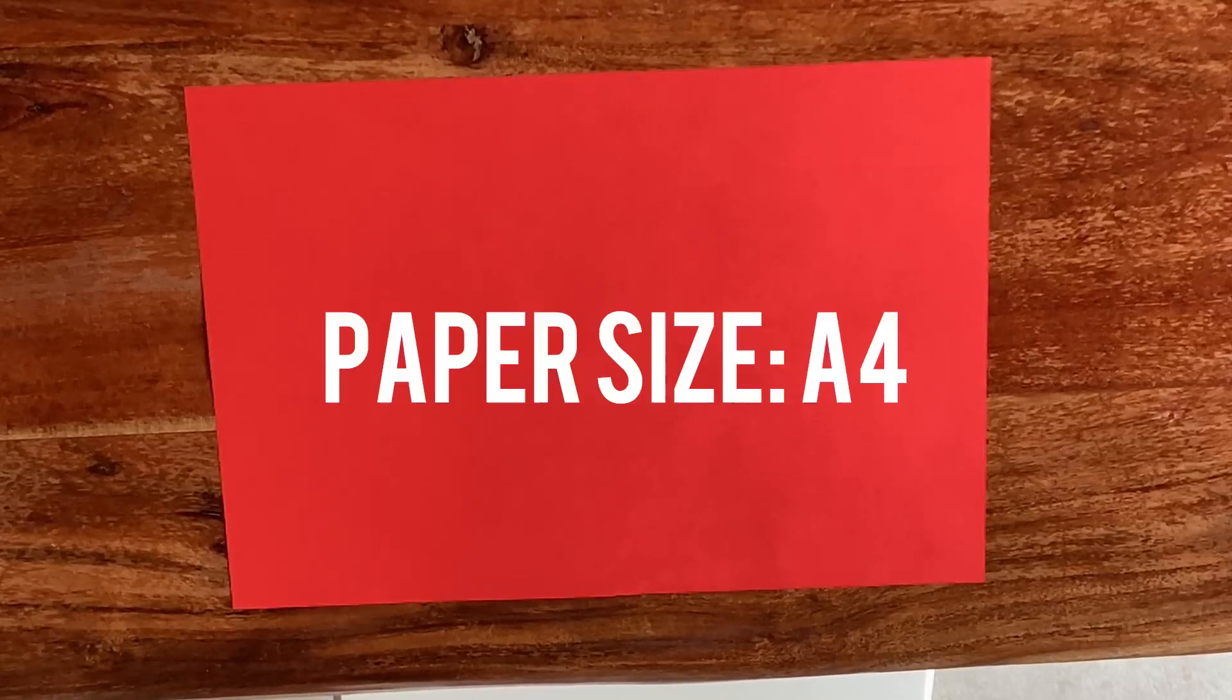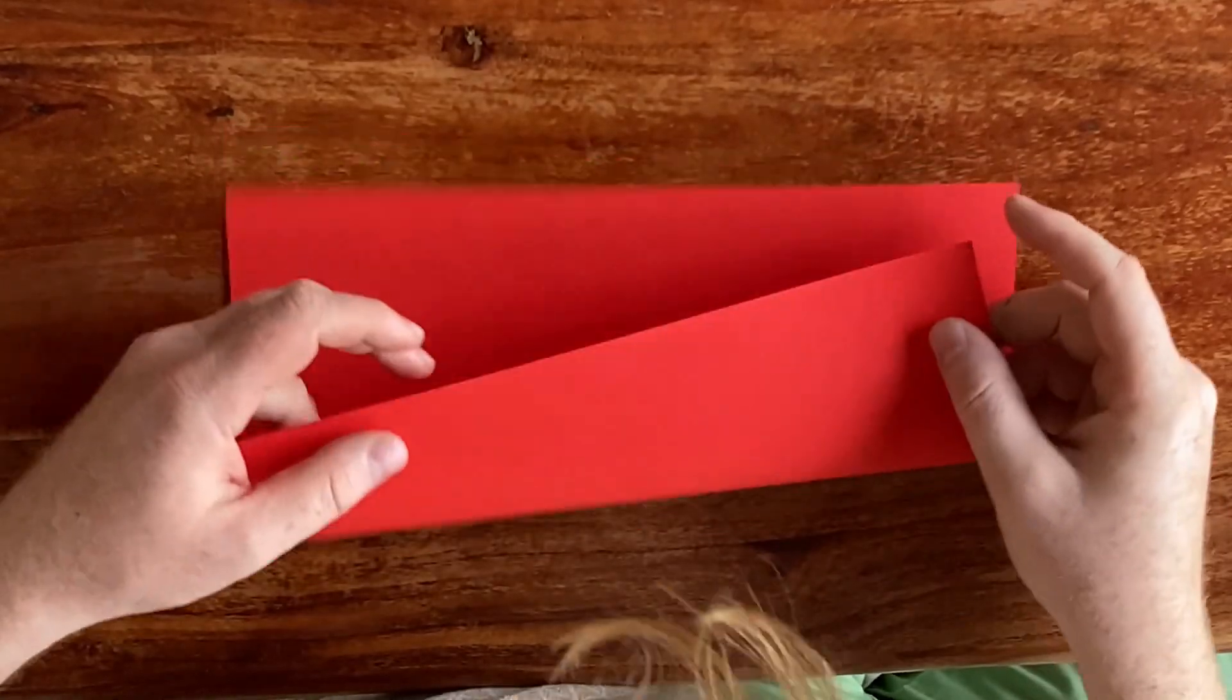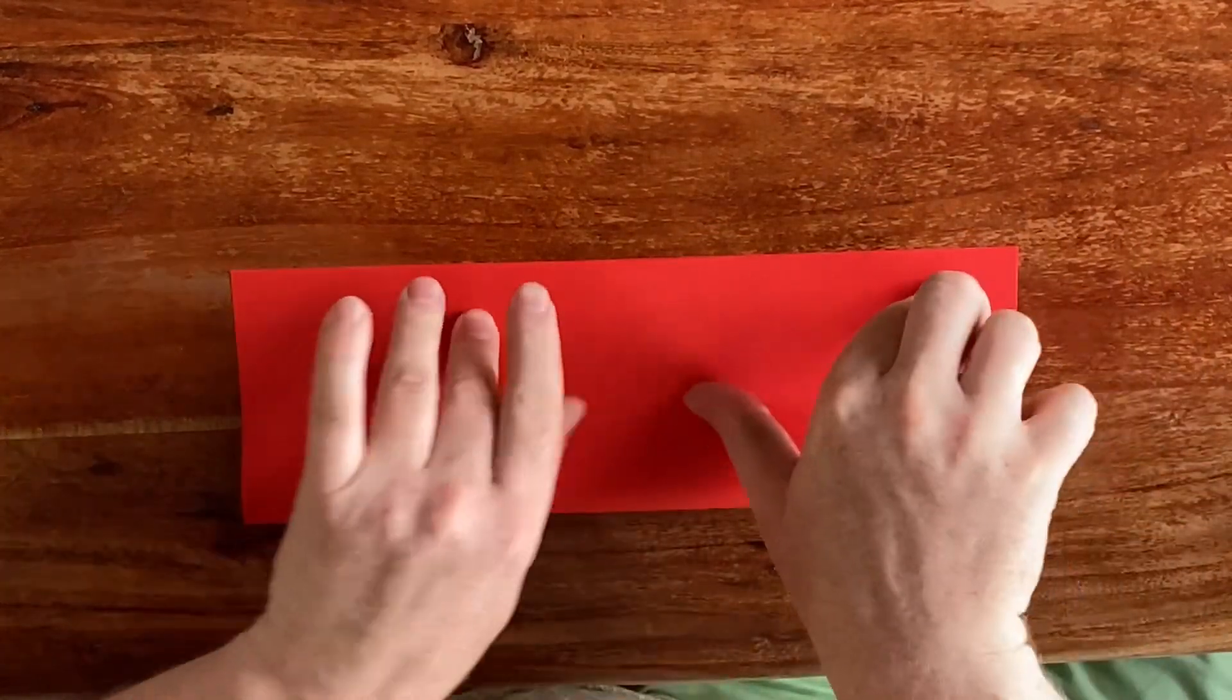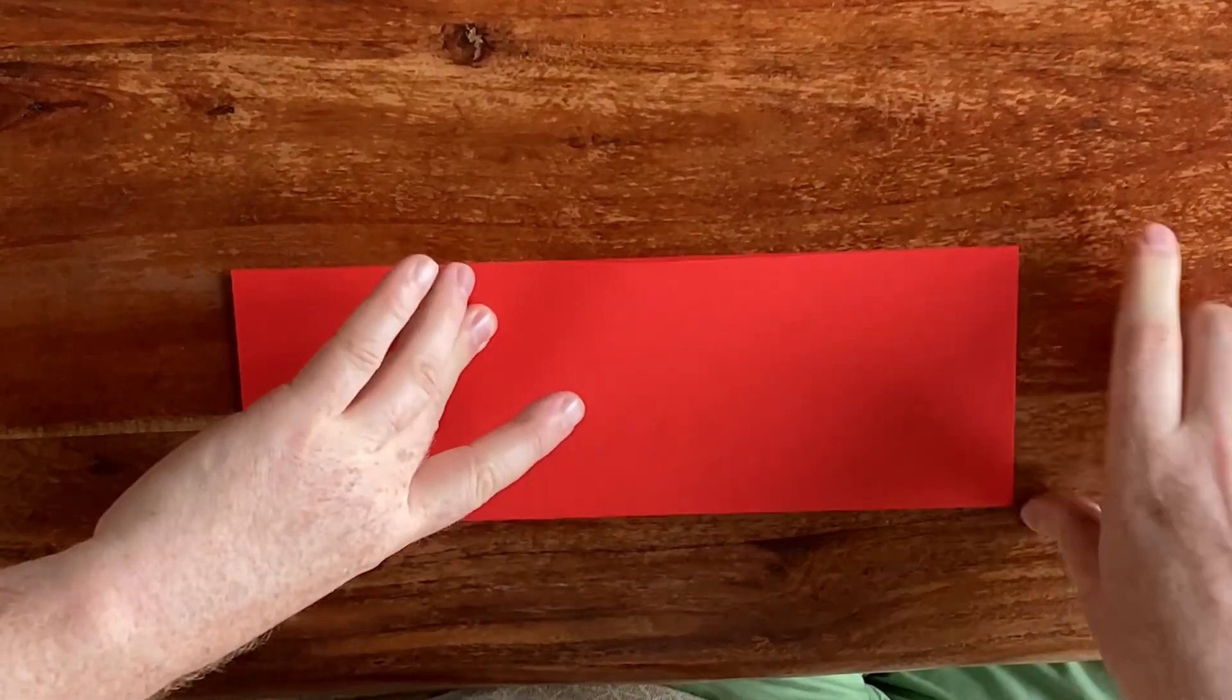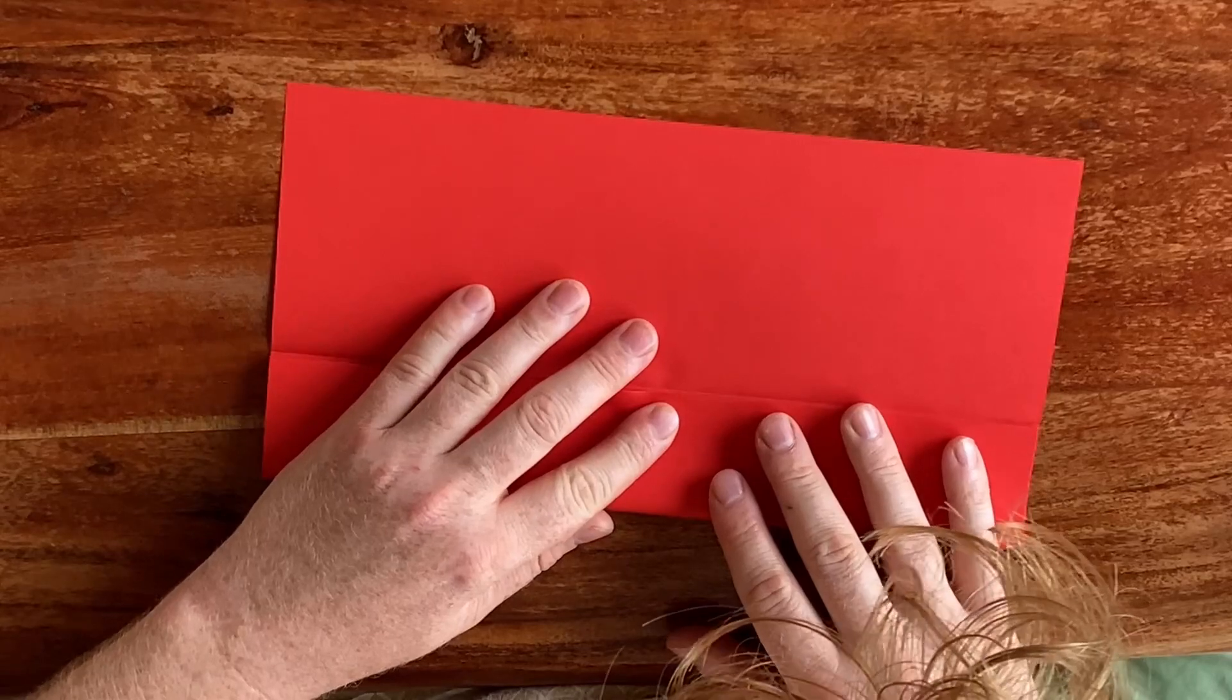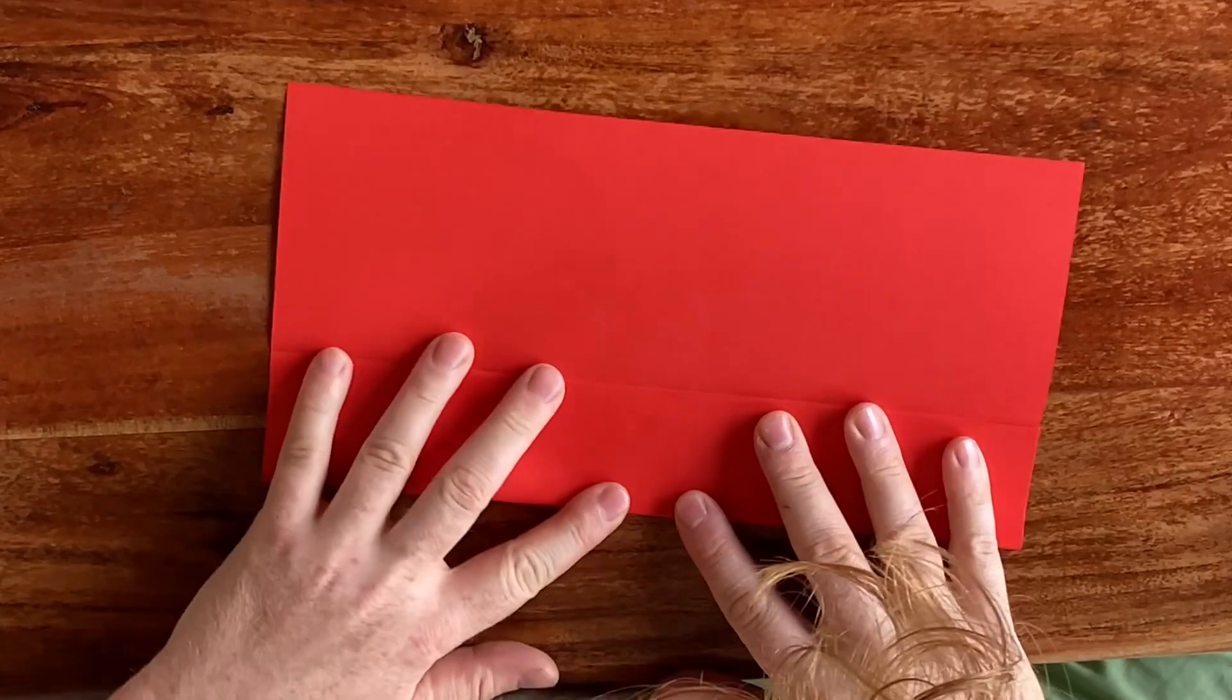I'm using a regular sheet of A4 paper. We're going to start by just folding it in half this way. You want to make sure you do this as accurately as possible. Now we're going to bring the edges and fold them towards the middle, and you can leave a gap of about one millimeter on each side.